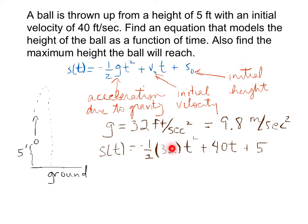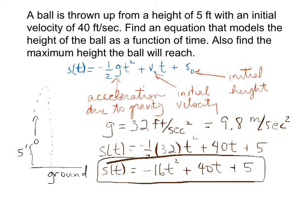So we can clean this up by multiplying the negative one-half and the 32. So we have s of t is equal to negative 16 t squared plus 40 t plus 5. So this right here is the equation or the function that models the height of the ball in terms of time.